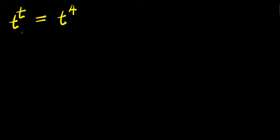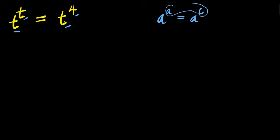How to solve this exponential problem: t to the power of t equals t to the power of 4. We are solving for all values of t that satisfy this equation. Using the identity that if a to the power of a equals a to the power of c, you can equate the exponents because the bases are the same. So here, t equals 4 is one solution.